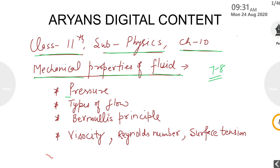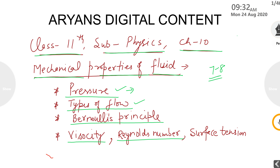In this chapter we are going to cover: first, pressure — what is pressure, its applications and uses in daily life. Then types of flow, since liquids can flow in a number of ways. Next is Bernoulli's principle, the basic principle used to study the flow of a liquid or the motion of any object in a fluid. Then viscosity, which is the type of friction present in a liquid. Reynolds number tells about the type of flow, and finally surface tension.